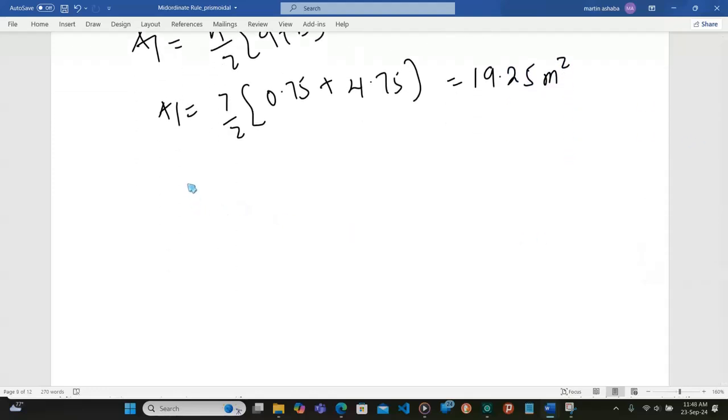So what is A2? A2 is also H out of 2 into A plus B. We have 3 out of 2 because the depth at the other end is 3. So 3 divided by 2 into 0.75 for the top, plus 2.75 for the bottom. This gives me 5.25 square meters.